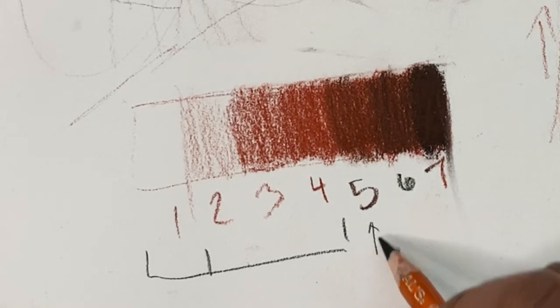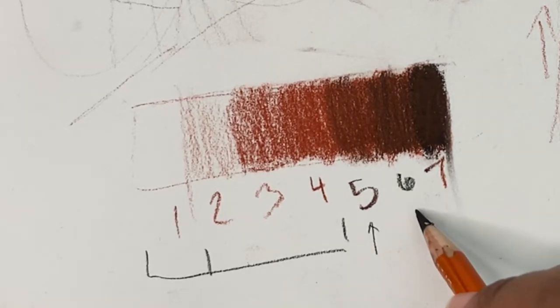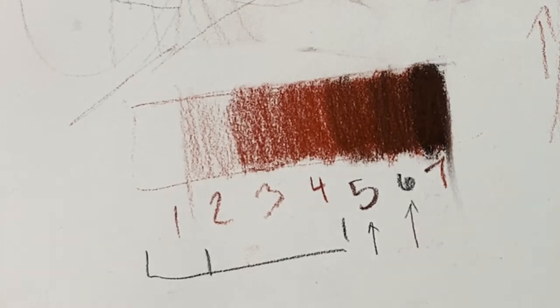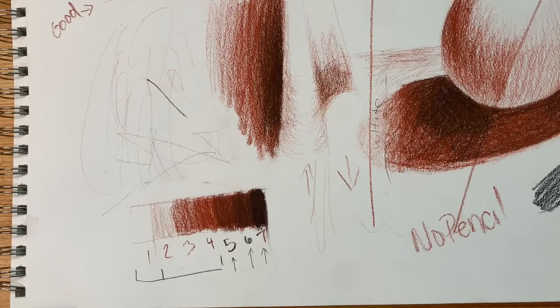When I go to 5, I'm adding sepia. When I go to 6, I'm adding a little bit of sepia plus black. When I get to 7, I'm adding sepia plus black and then a little bit more black.